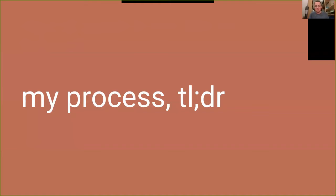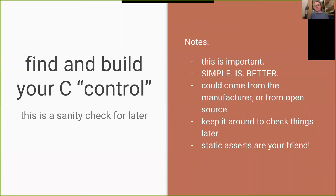Here's a quick TL;DR run-through of my process. Step one: find and build your C control. Find an existing C project with a Makefile, build it, run it, and make sure it actually works — wiring and build process verified. This is your sanity check for later when you're deep in Rust-C cross-communication and you haven't verified whether the hardware is even working. This could come from your manufacturer — Nordic provides a lot of this — or from open source communities like the Arduino family. Keep it around for reference later.